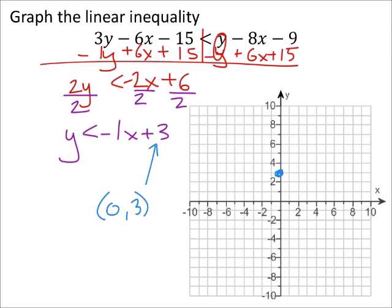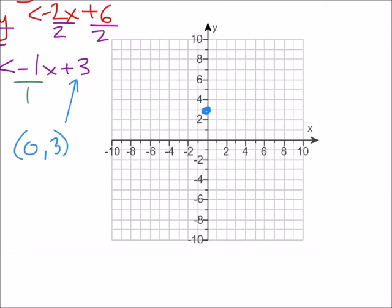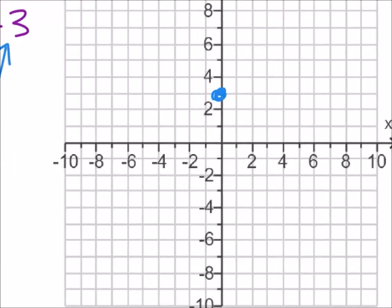And my slope is a negative 1. If it helps, you can make it over 1. So I would go, let's zoom in on this. Down 1. And then to the right one. Giving me this point.